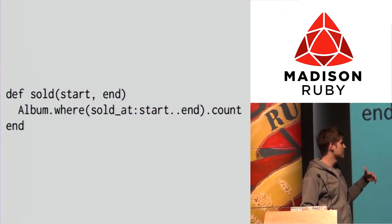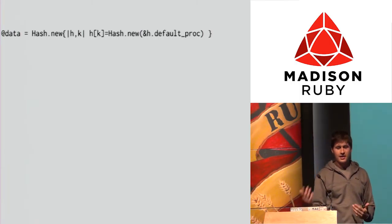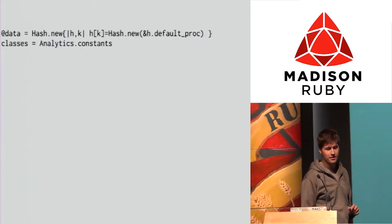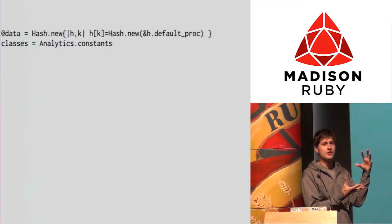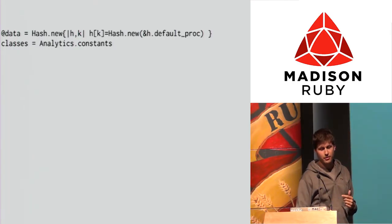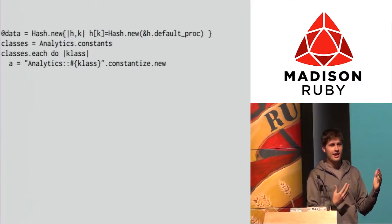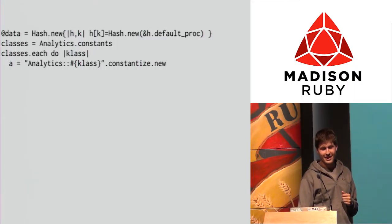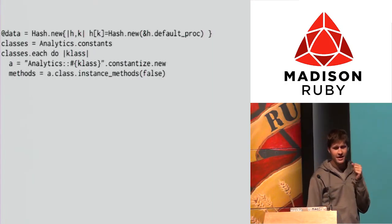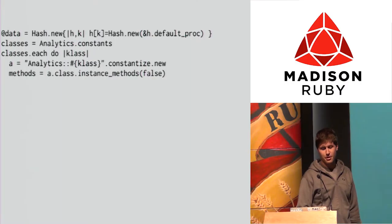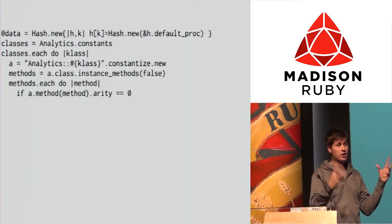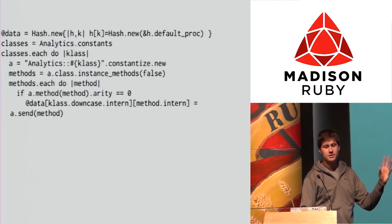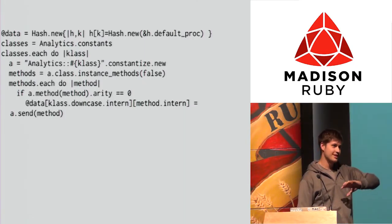I also wanted to do time-based analytics — one method is a count, another is a count based on time. I started by creating an infinitely nestable hash. Then I took the analytics module and looked at all the constants inside it — every model in my Rails app. For each of those classes, I could create a string, constantize it, and create new instances of that class. That was like my first metaprogramming 'everything' moment — I thought it was so freaking cool. For each object I looked at all the instance methods, then looked at the number of arguments: no arguments means it's a count; some arguments means it's a time-based metric.